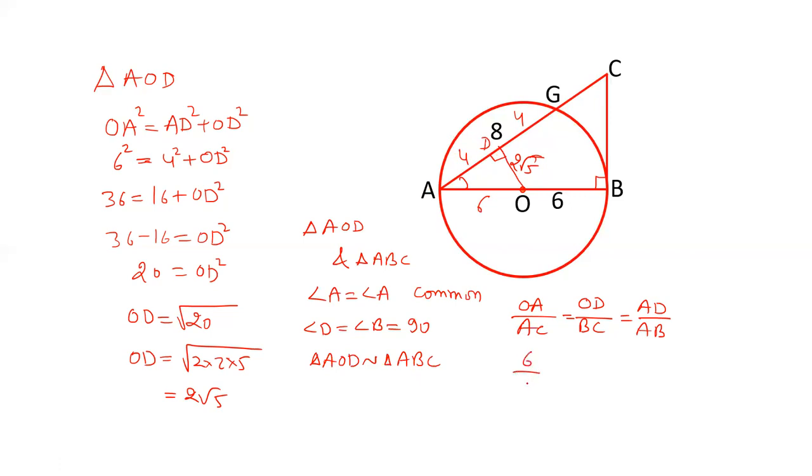AC is unknown, which is actually AG plus GC. OD is 2√5. BC we have to calculate. AD is 4, and AB is 12. So the ratio of AD to AB is 1:3.